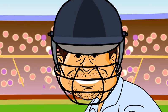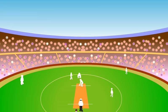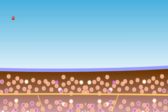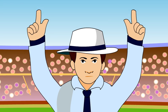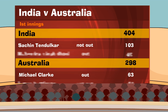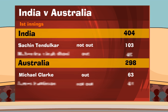Satchin concentrates hard. The ball comes in. It's a 6! What a shot. Satchin scores 100. India gets 400.